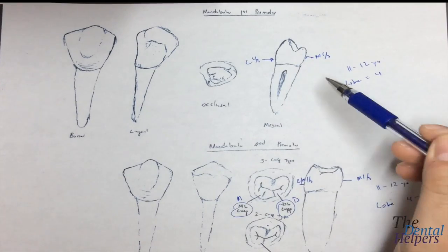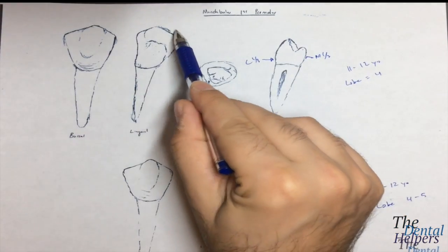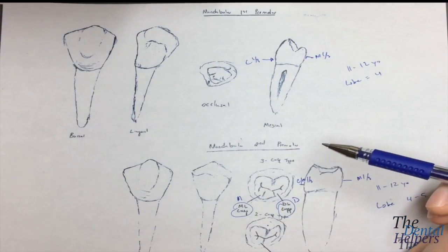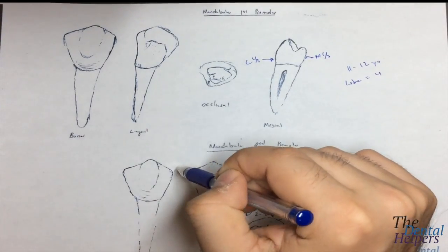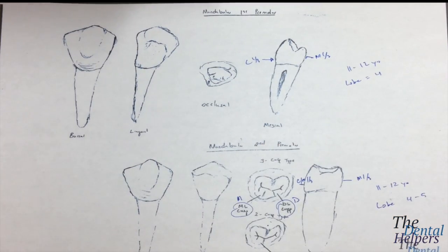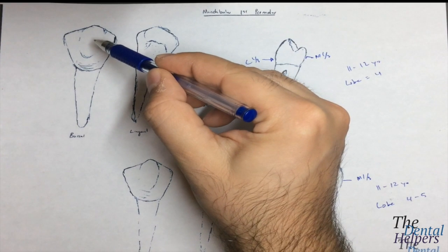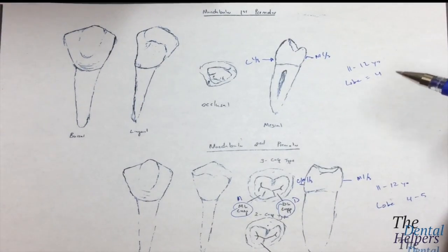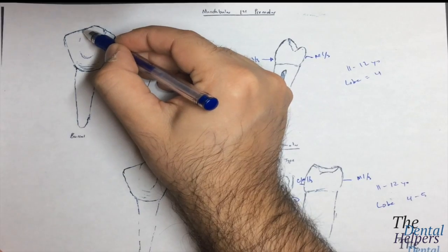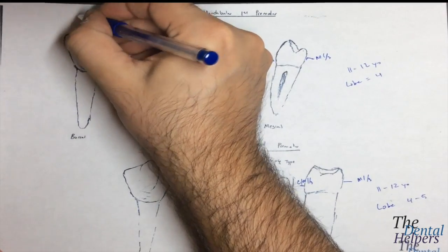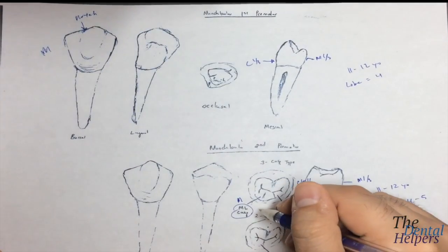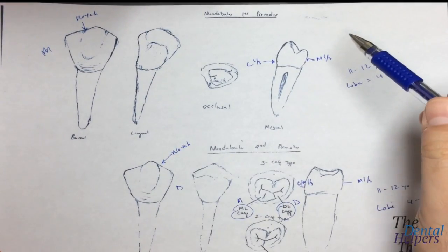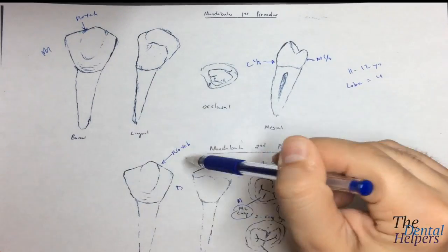The difference between these two teeth in terms of cusp sharpness is that the first premolar is going to be sharper than the second, with a pointed cusp, while the second is less pointed and more blunt. Another big difference is the mesial cusp ridge: in the mandibular first, there's a slight notch on the mesial. In the mandibular second, that same notch is going to be on the distal. So in the first versus the second, the notch is on opposite sides.